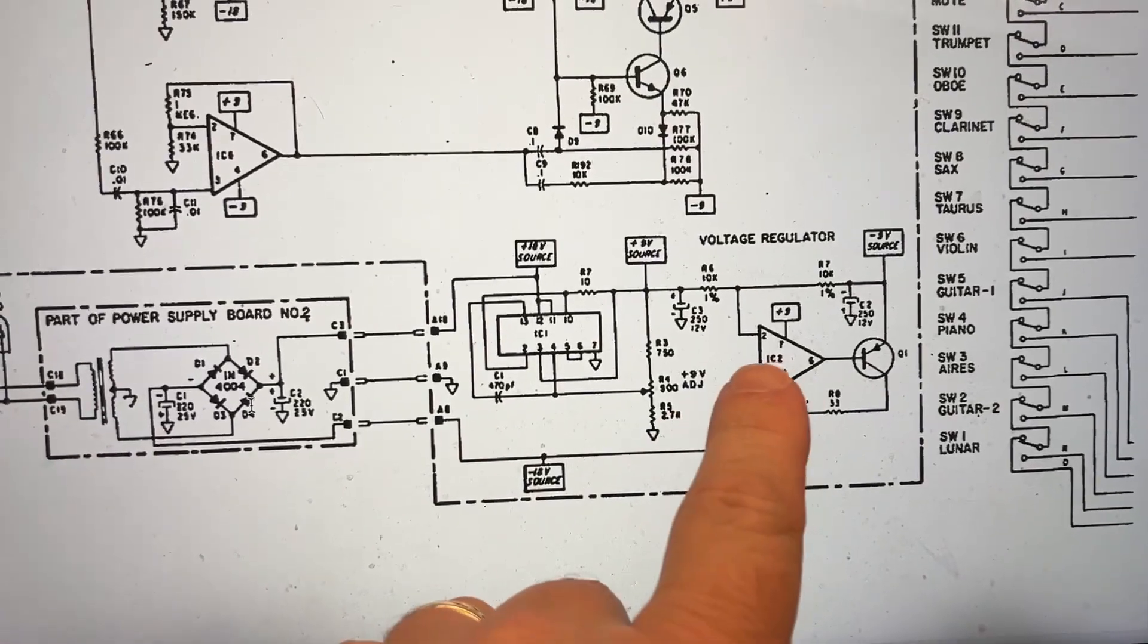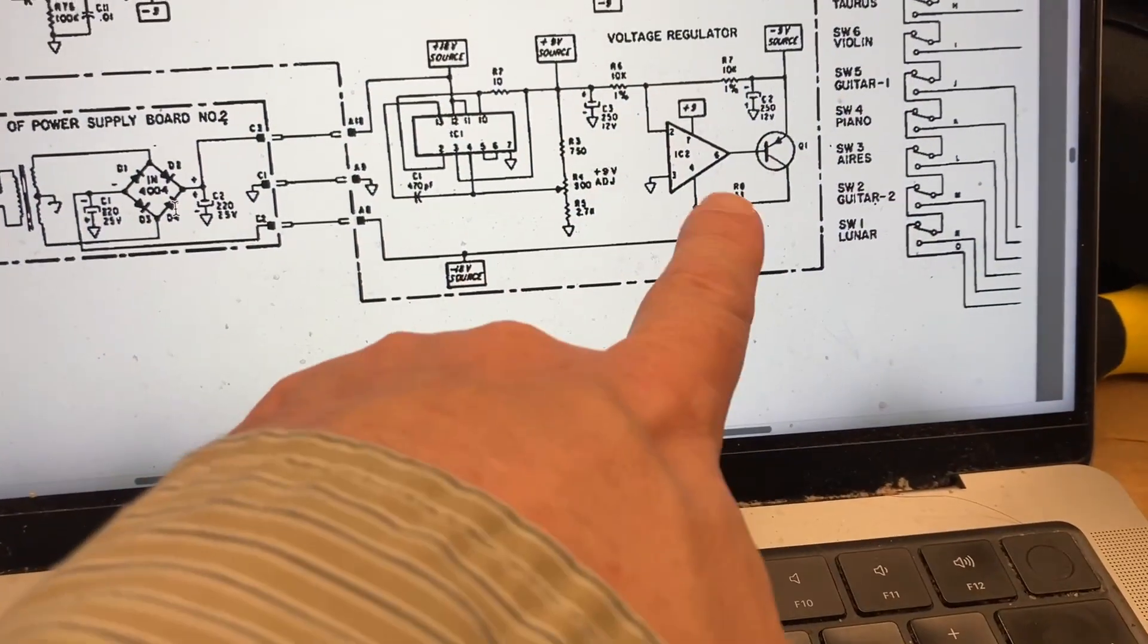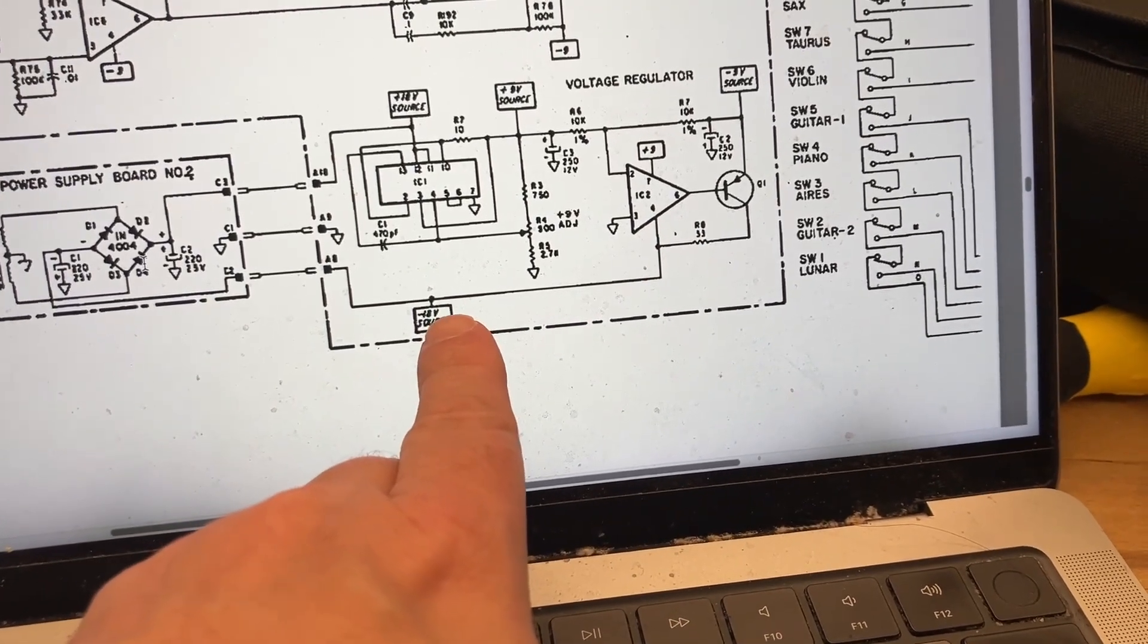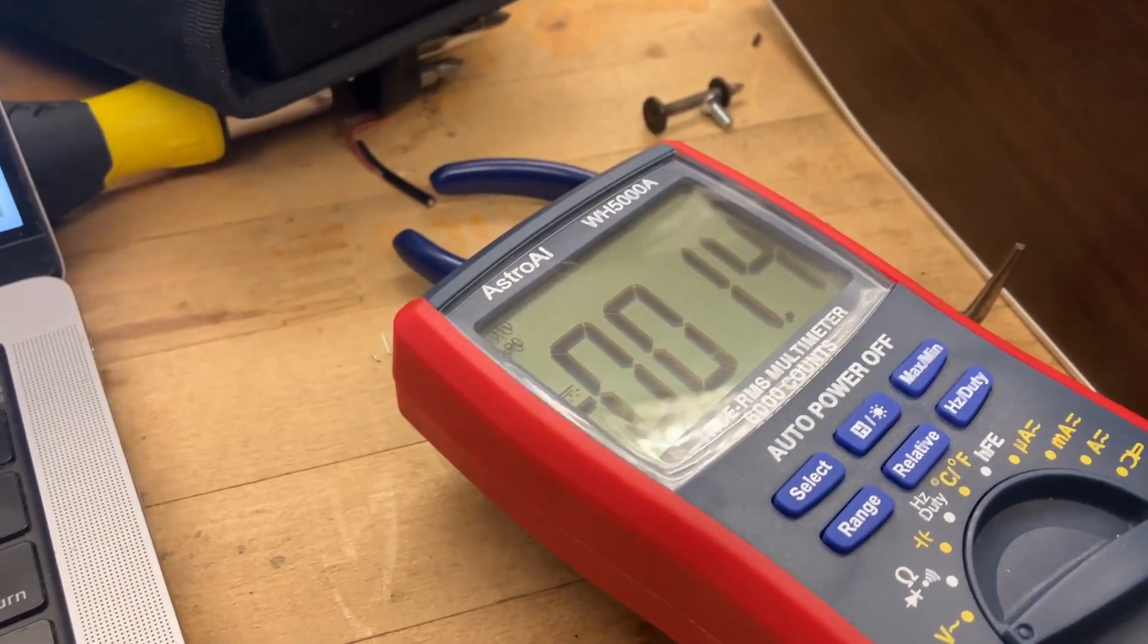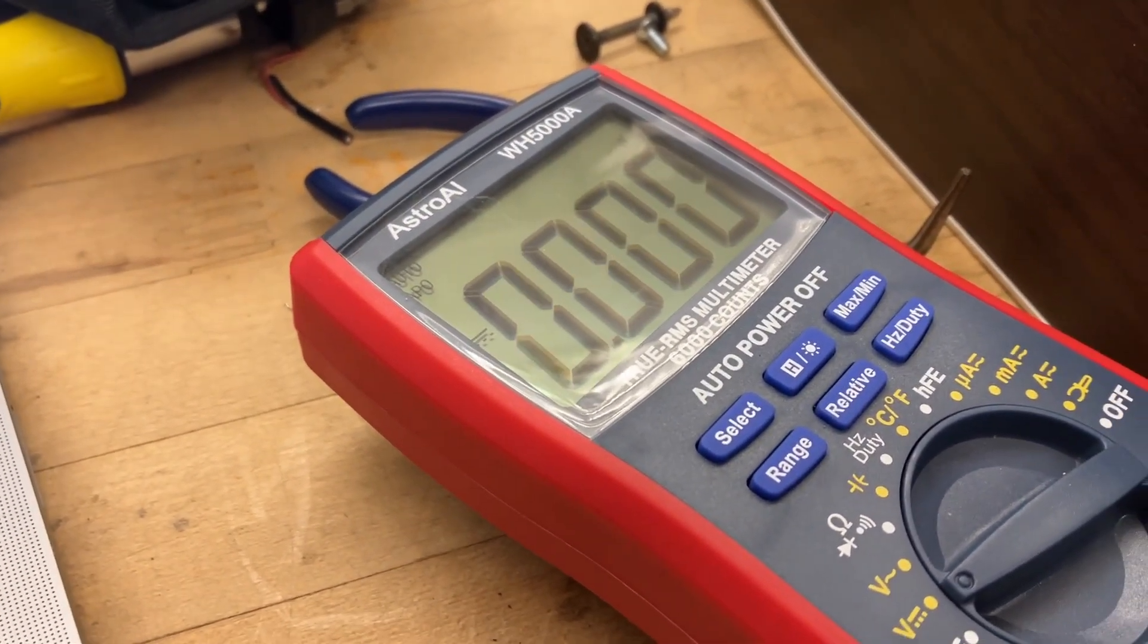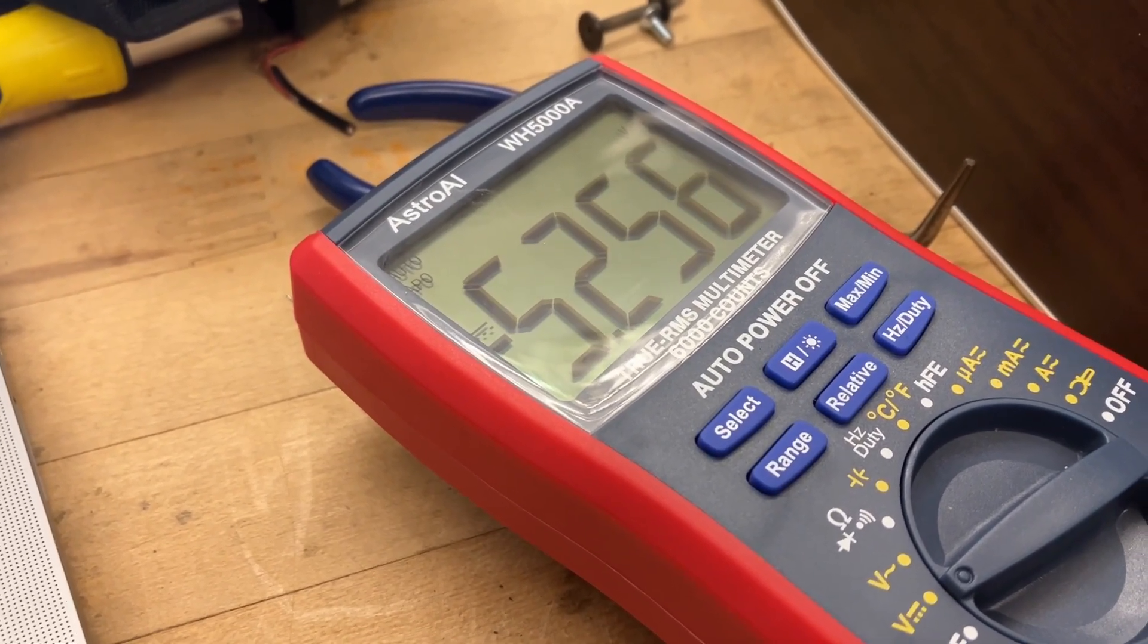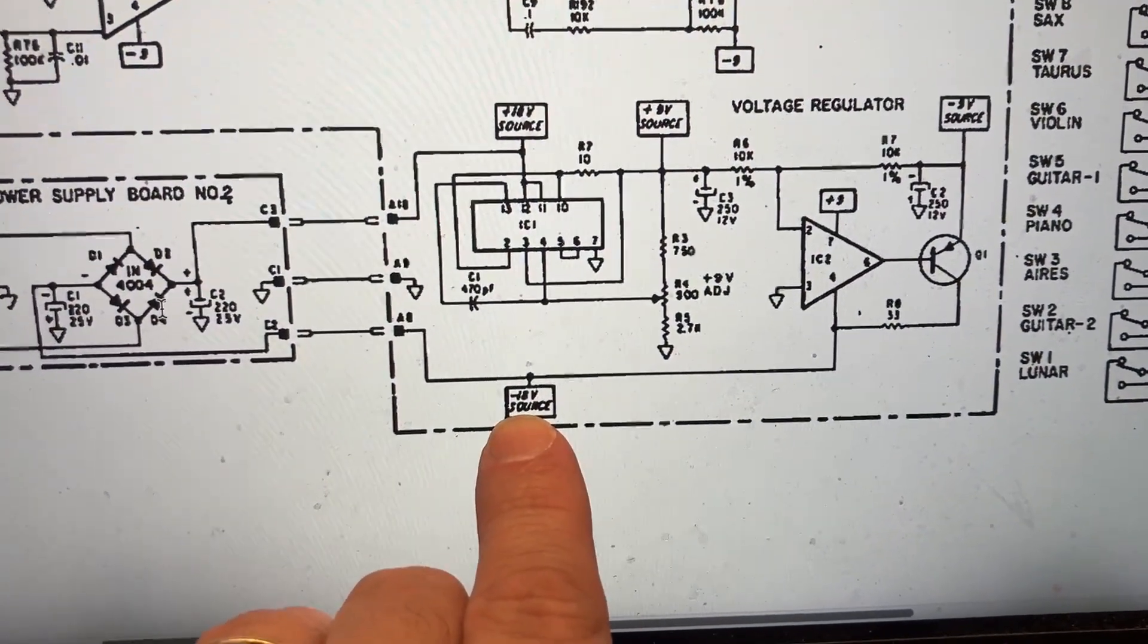All right. Okay, and IC2 is supposed to have 9 volts on it. Let's now measure from pin 4 of that chip to ground. That should be minus 18. Pin 4, you said? Yeah. 1, 2, 3, 4, to ground. Oh wait, that's minus 5? Wait, my red lead is on 4 and my black is on the ground. Oh, maybe something's suspect with our negative supply.